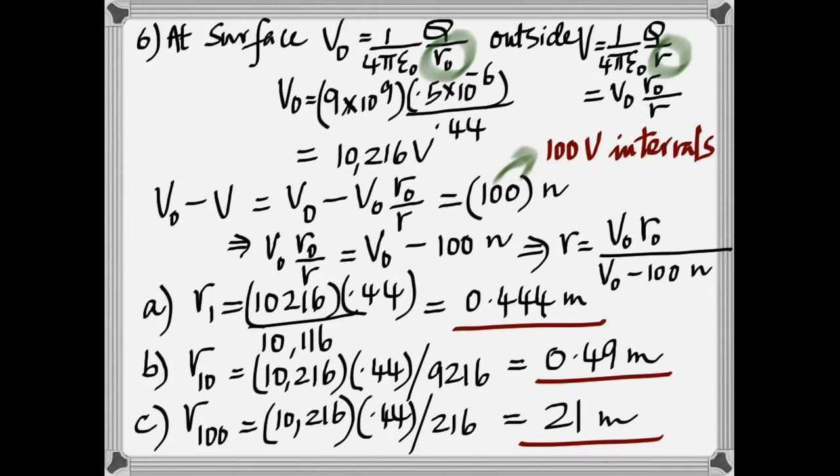And then the difference between V-naught and V would be given by this formula, which is 100 times N. Because the problem talks about 100 volt intervals. So from that, rearranging, you can make R the subject. And once you get it in that form, it's just a matter of looking at the N in each case and calculating for the first, tenth, and the hundredth.